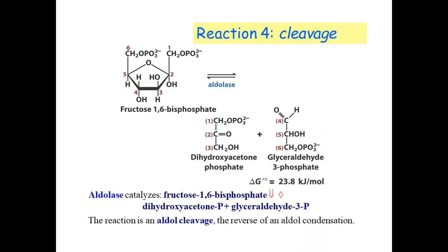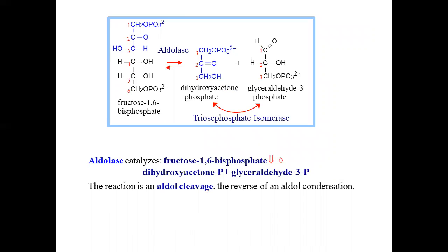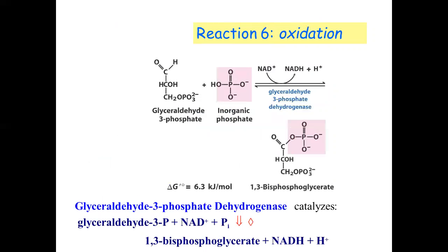Dihydroxyacetone phosphate undergoes isomerization to glyceraldehyde. Further, glyceraldehyde is further oxidized, and another phosphate group is added. By oxidation — note here that the phosphate is added not through ATP but through simple oxidation.